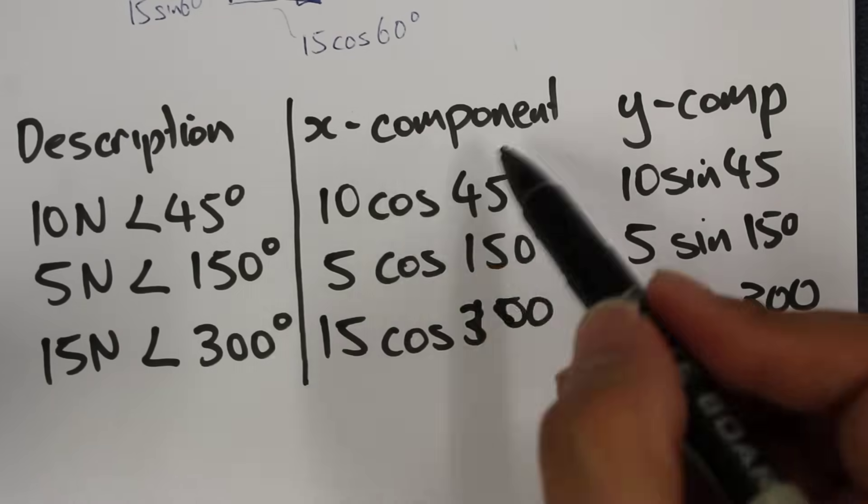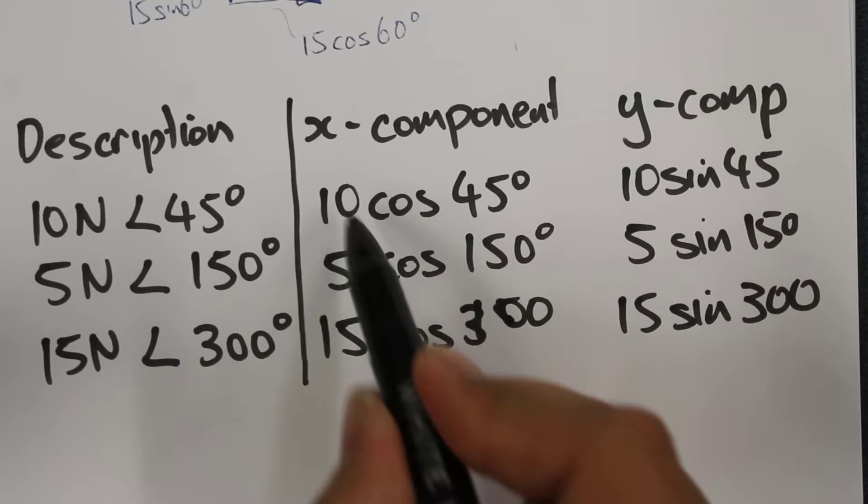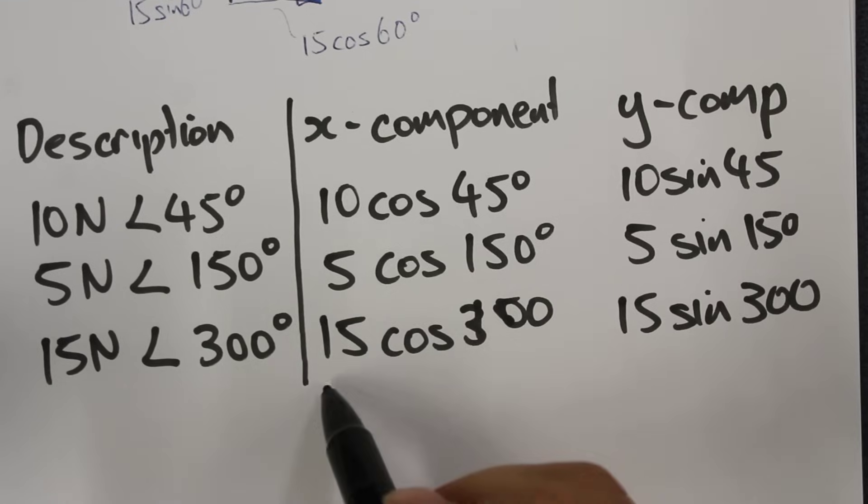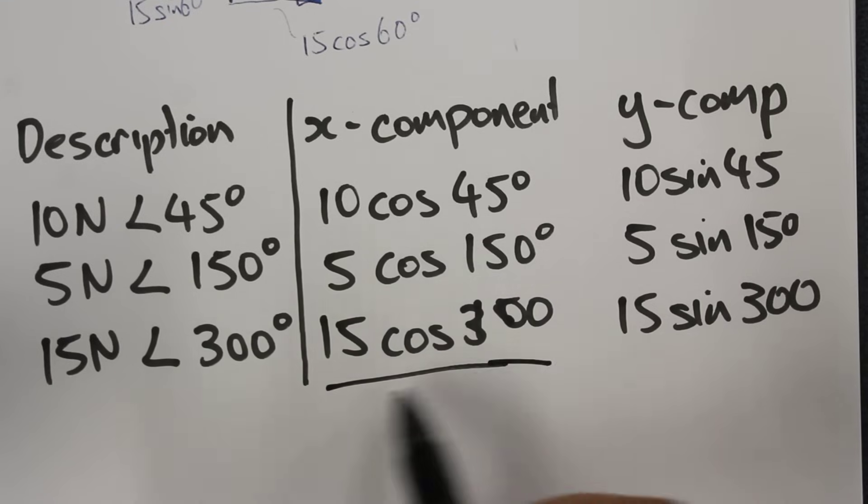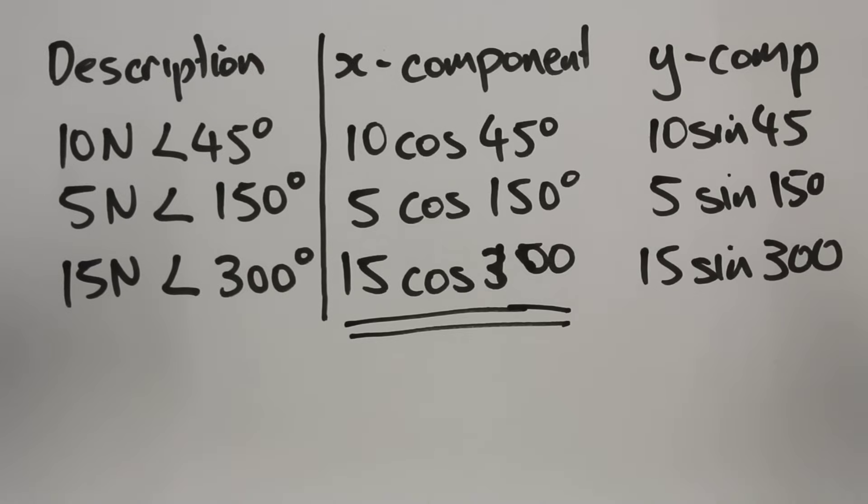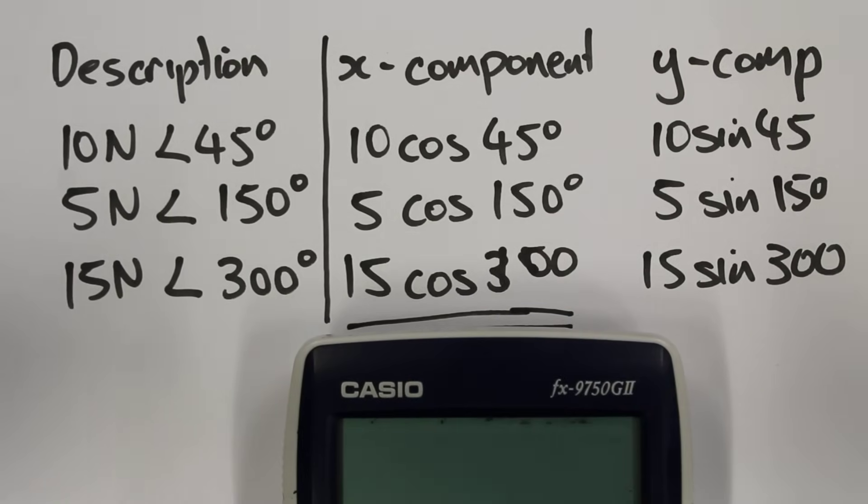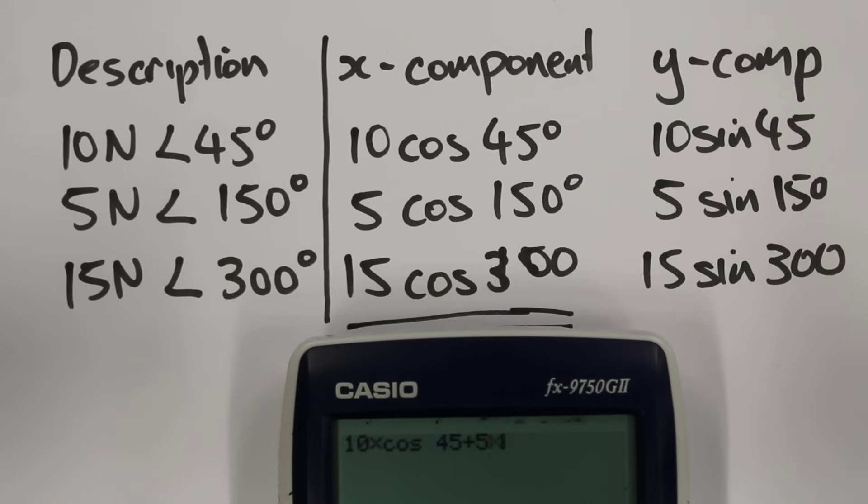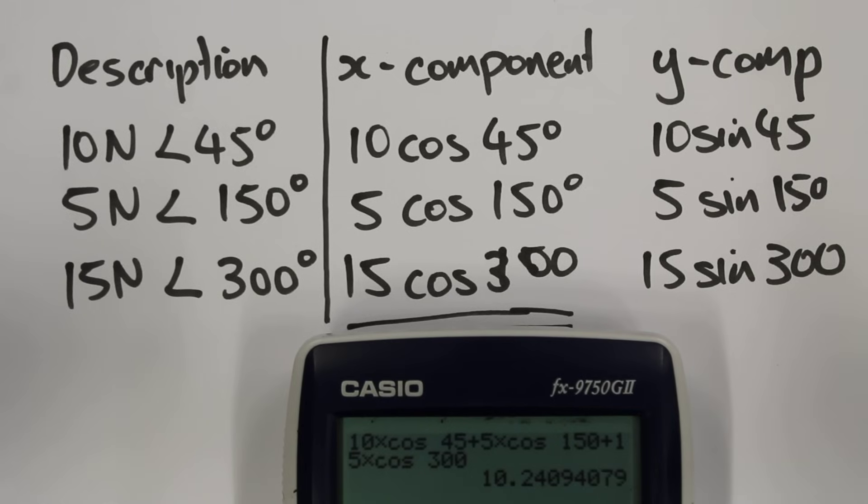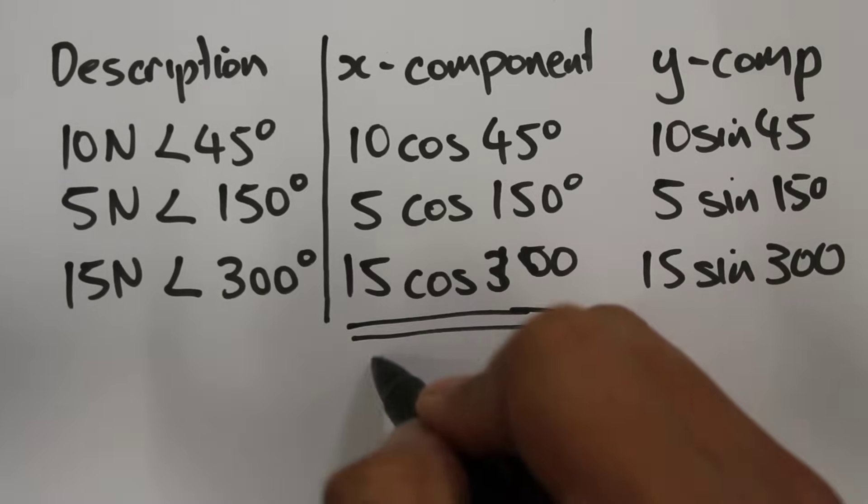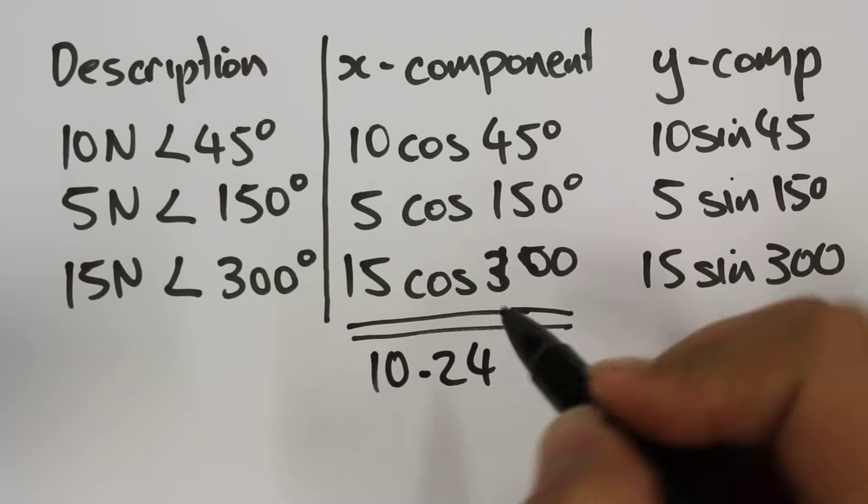We can now find the total sum of the x-components, and that will be equal to the sum of these three values added together. On my calculator, I'll type those values in: 10 times cos 45 plus 5 times cos 150 plus 15 times cos 300. I'll press the equals button and we get 10.24 as our total x-component of our force. The units for this will be newtons.